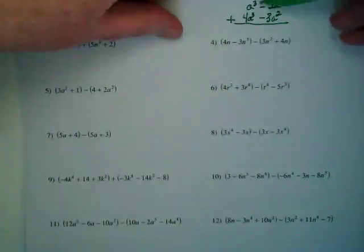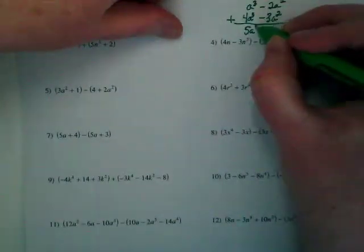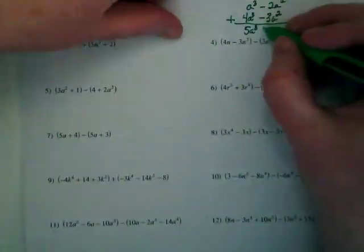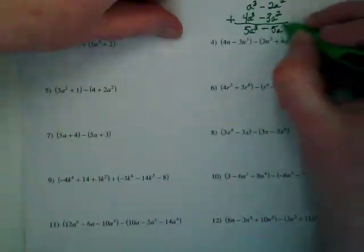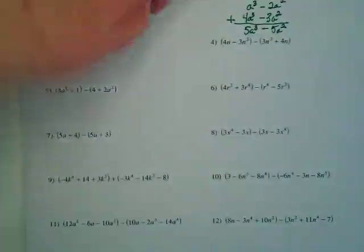What's invisible in front of this a to the third? There's an invisible 1. So my a to the third becomes 5a to the third. And then we get negative 5a squared. Thumbs up if you feel like you could just practice this now. Excellent.